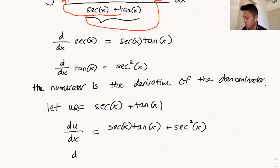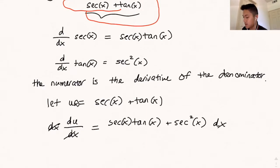Which is just the numerator. So if we rearrange this and multiply both sides by dx, we'll find that du is just equal to the numerator times dx. Great.